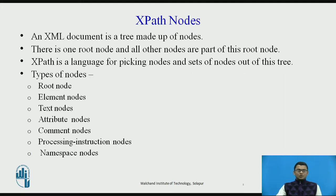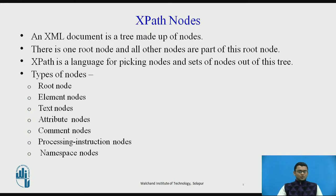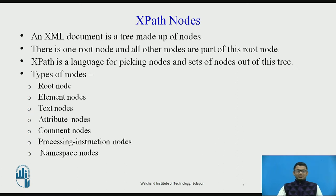So what are nodes in XPath? An XML document is a tree — it is made up of nodes. There is one root node and all the other nodes are parts of this root node. XPath is a language for picking up these nodes, or a particular set of nodes as required, out of this tree.